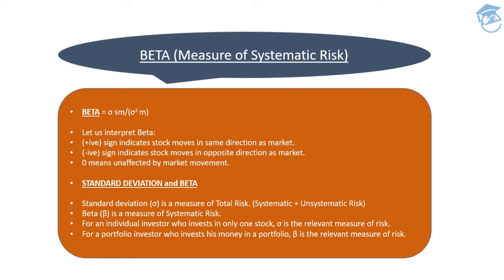Beta, on the other hand, is a measure of systematic risk. I would recommend beta only when someone is investing in portfolios directly aligned with the market, where unsystematic risk has already been diversified away. Since there is no unsystematic risk in such efficient portfolios, use beta — the measure of systematic risk. In summary: for an individual security investor, standard deviation is the relevant risk measure; for a portfolio investor, beta is the relevant risk measure.